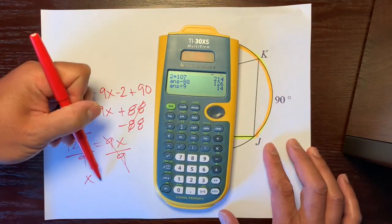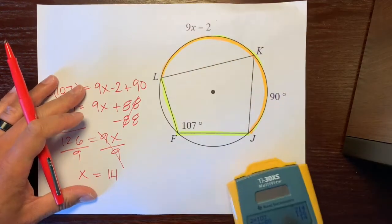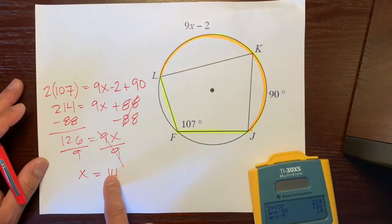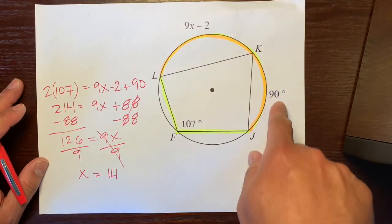So x is equal to 14, not 14 degrees, but it's just 14.